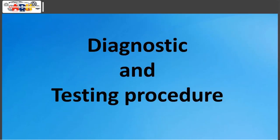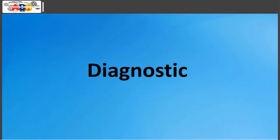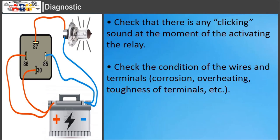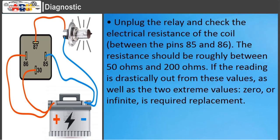Diagnostic and testing procedure. Diagnostic: check that there is a clicking sound at the moment of activating the relay. Check the condition of the wires and terminals — corrosion, overheating, tightness of terminals. Unplug the relay and check the electrical resistance of the coil between pins 85 and 86. The resistance should be roughly between 50 ohms and 200 ohms. If the reading is drastically out of these values, including the two extreme values — zero or infinite — replacement is required.